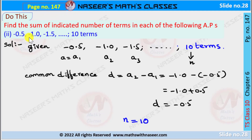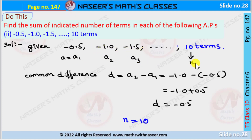Now we solve the second part, page 147. The given AP series is −0.5, −1.0, −1.5, and so on; we have to find the sum of 10 terms. The first term a₁ = −0.5, the second term a₂ = −1.0, the third term a₃ = −1.5, and the number of terms n = 10.